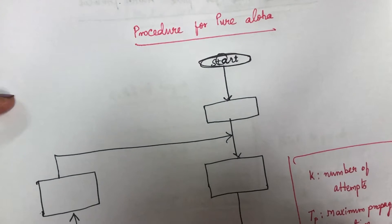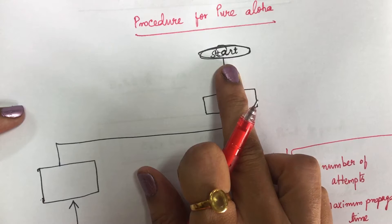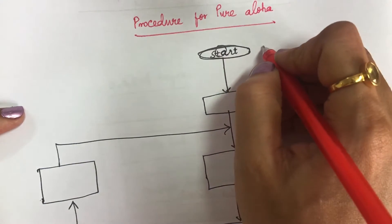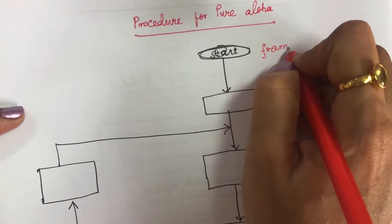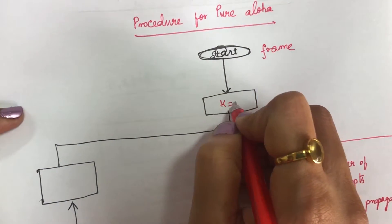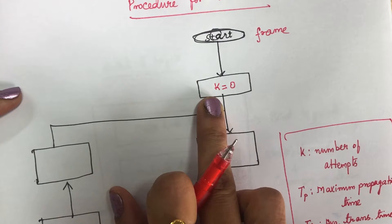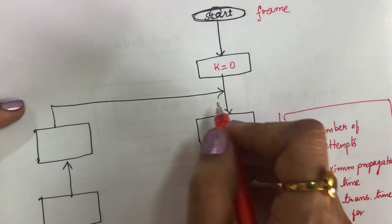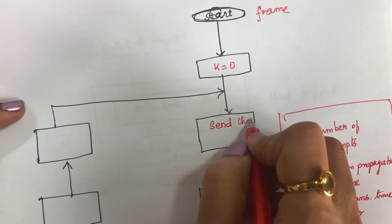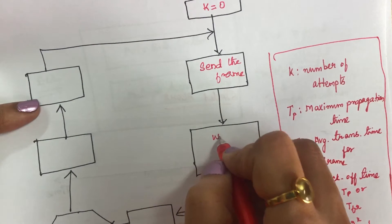Now we will see the procedure for pure ALOHA with a flowchart. First, start. If a station wants to send a frame, initially k is set to 0, where k is the number of attempts. The station sends the frame, then waits for a time of 2 × Tp (where Tp is the maximum propagation time — the time required for a frame to travel from sender to receiver).